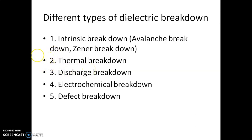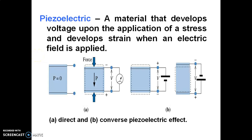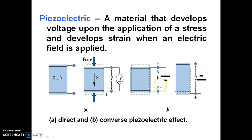The next concept is piezoelectricity. A material that develops voltage upon the application of stress, and develops strain when an electric field is applied, is called a piezoelectric material. Looking at the figure: in the initial state P = 0 and there is no polarization. Once you apply a mechanical force or stress, some dipole moment takes place due to the alignment of dipoles in one direction, and an induced voltage is generated across the dielectric material, which you can measure using a voltmeter.